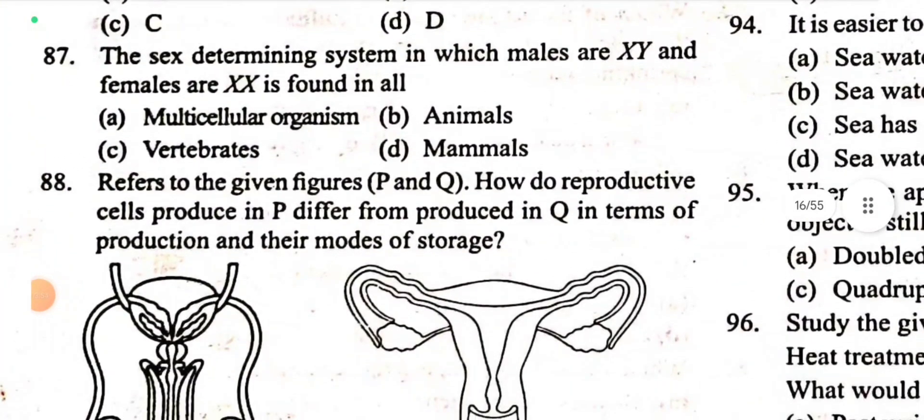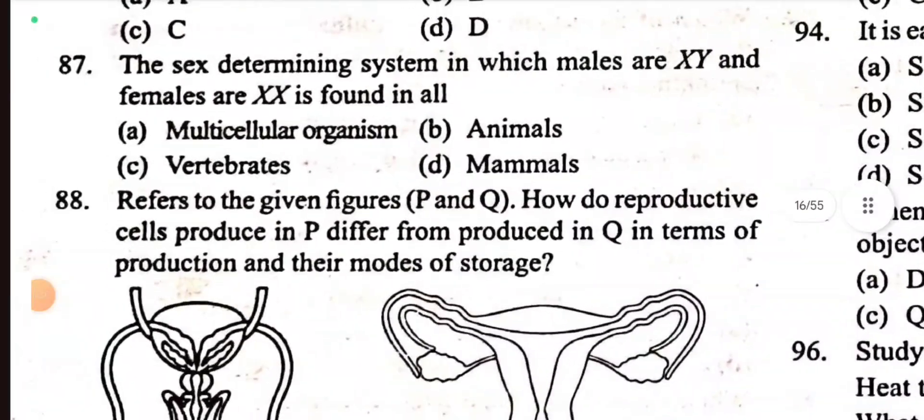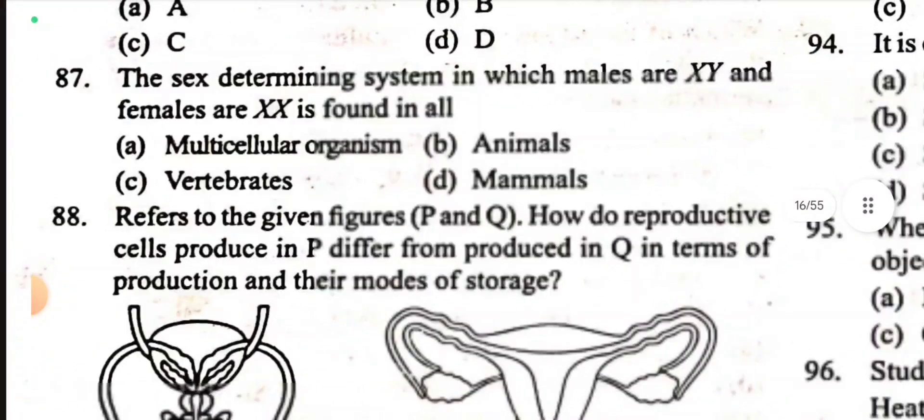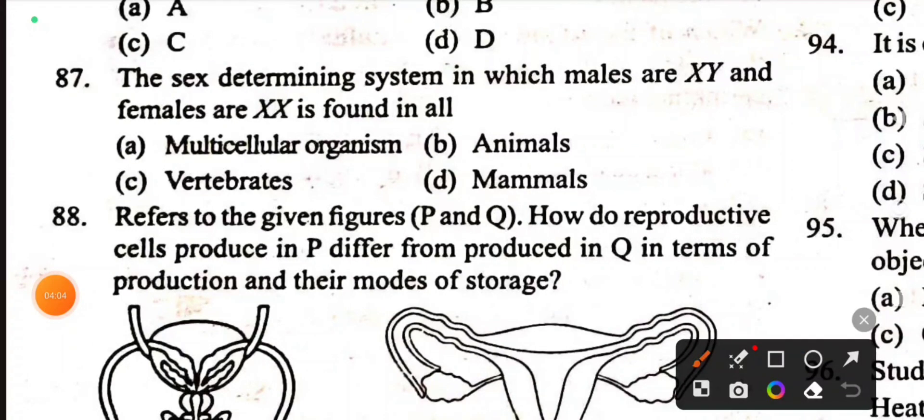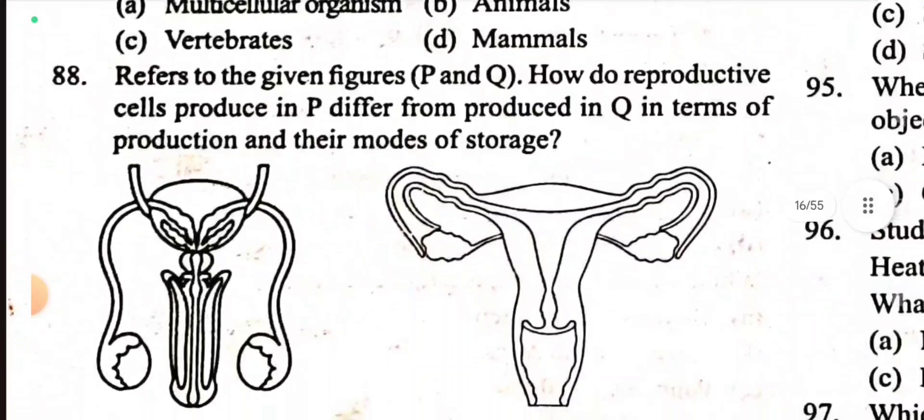Question 87: The sex determining system in which males are XY and females are XX is found in all mammals. Males have XY chromosomes, female cells contain XX chromosomes.